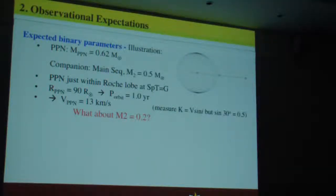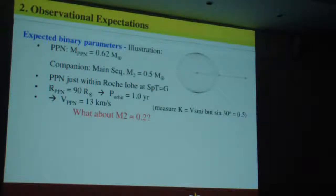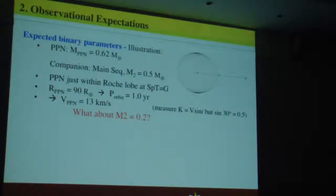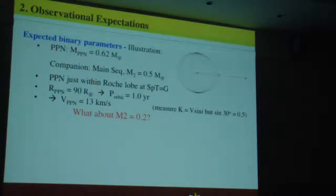So what do we expect? Let me illustrate this. Suppose we have a central star of 0.6 solar masses with a main-sequence binary companion of half a solar mass. If the proto-planetary nebula is just within its Roche lobe as a G-star, then we'll have a size of about 90 solar radii. The companion going around it would have a period of about a year, and that gives a velocity semi-amplitude of 30 kilometers per second. Even at an inclination of 30 degrees, it doesn't drop all that much.